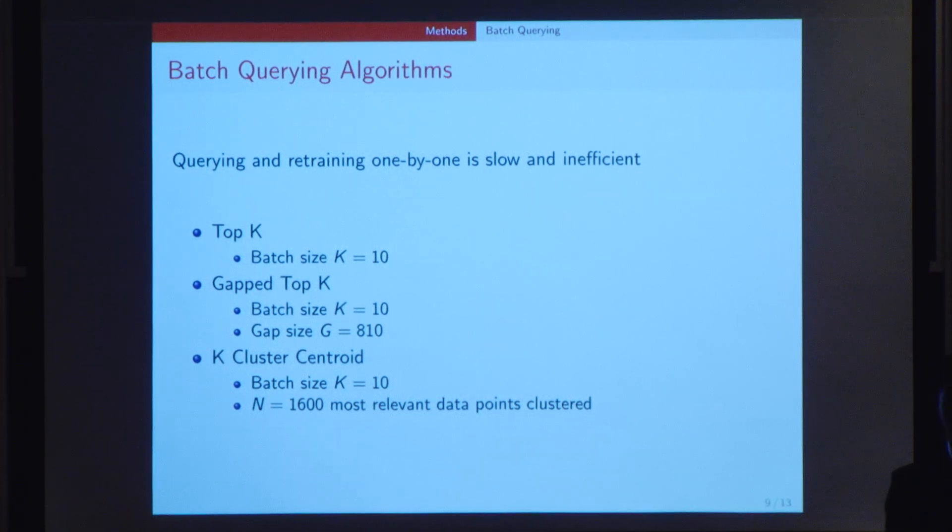The K-cluster centroid algorithm works on the basis of an unsupervised learning algorithm. We specifically used the K-medoids algorithm for this purpose, where it clusters the N most relevant data points into K clusters and selects a centroid from each cluster to be queried. The values of K, G, and N that you see here were determined through optimization of different values.